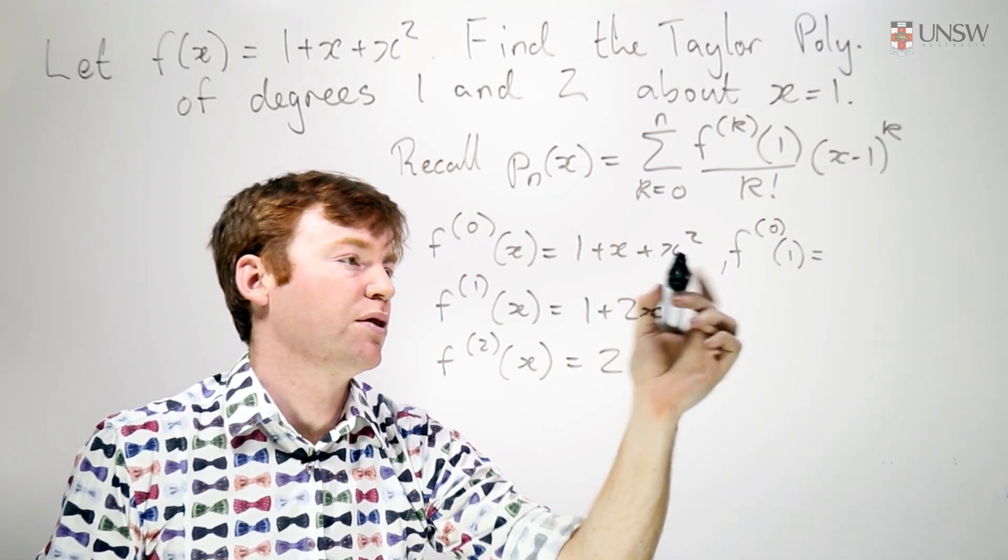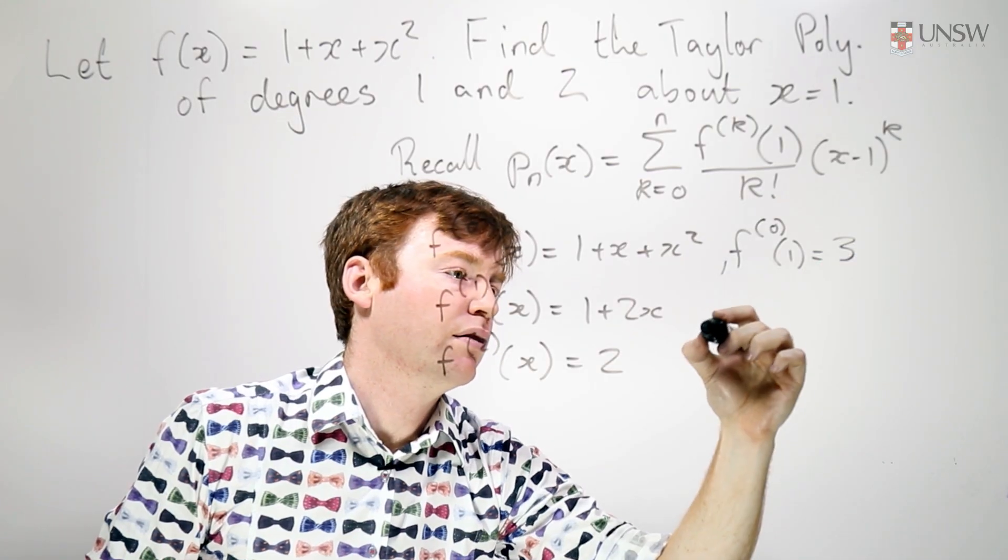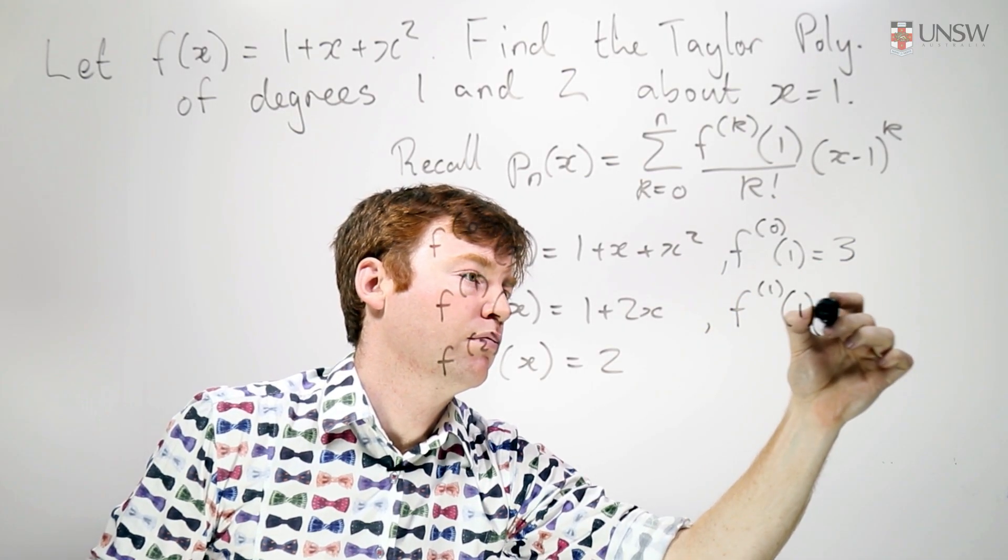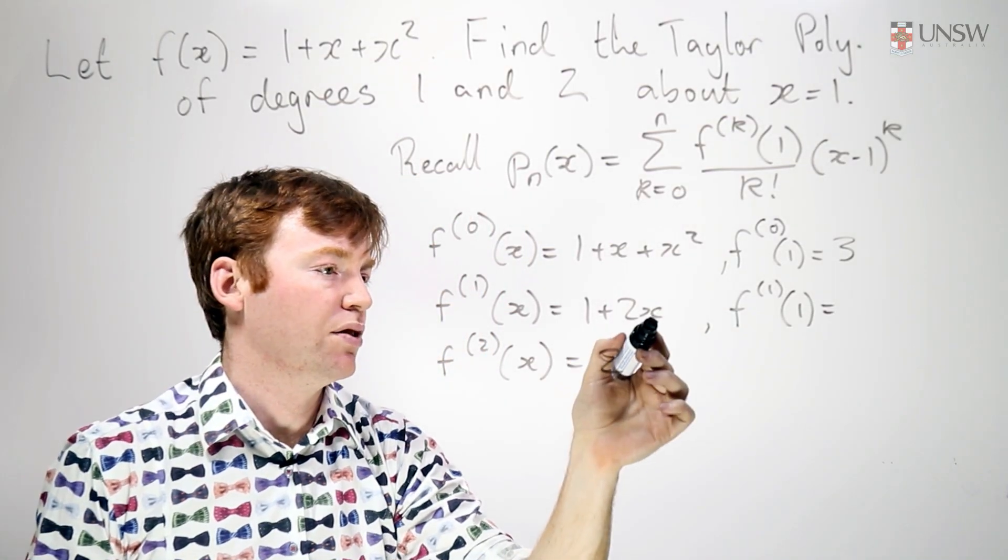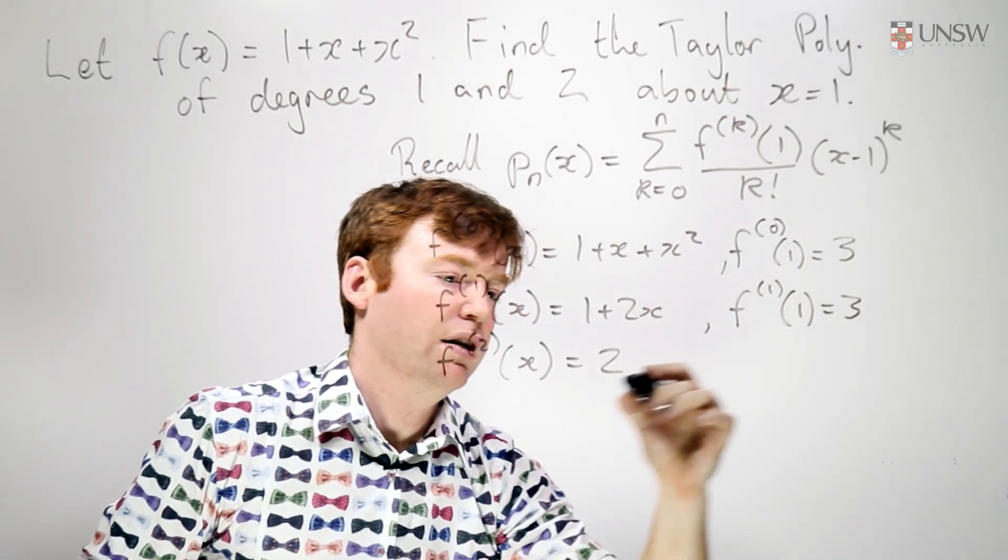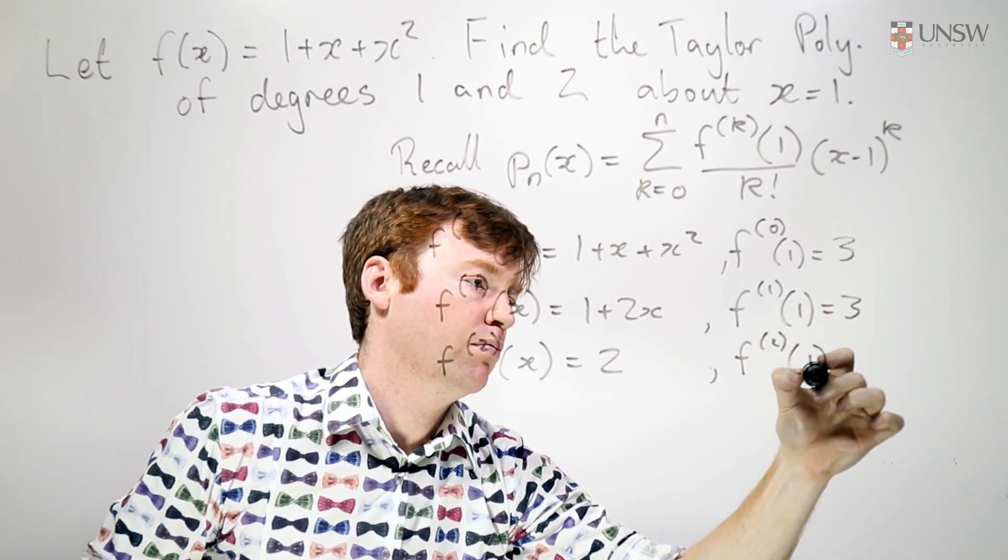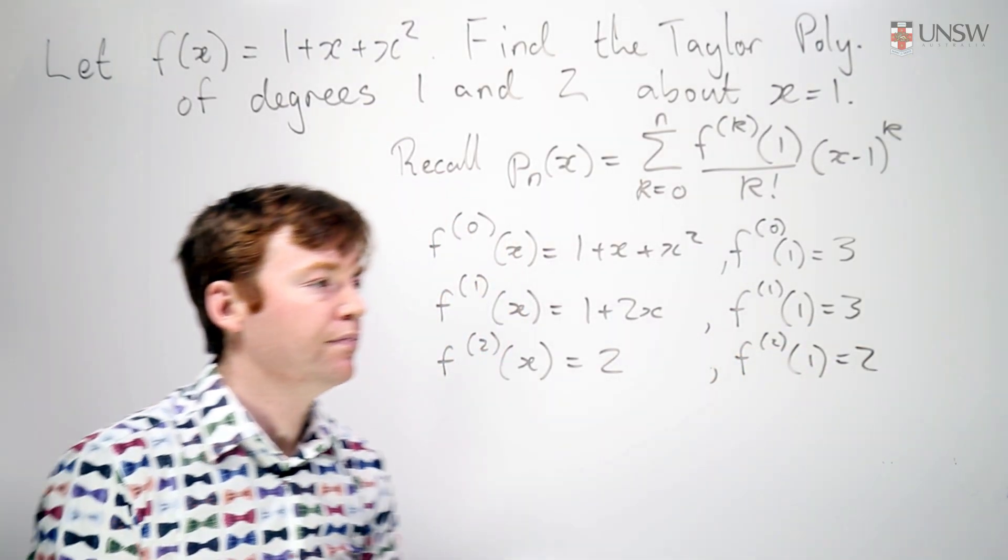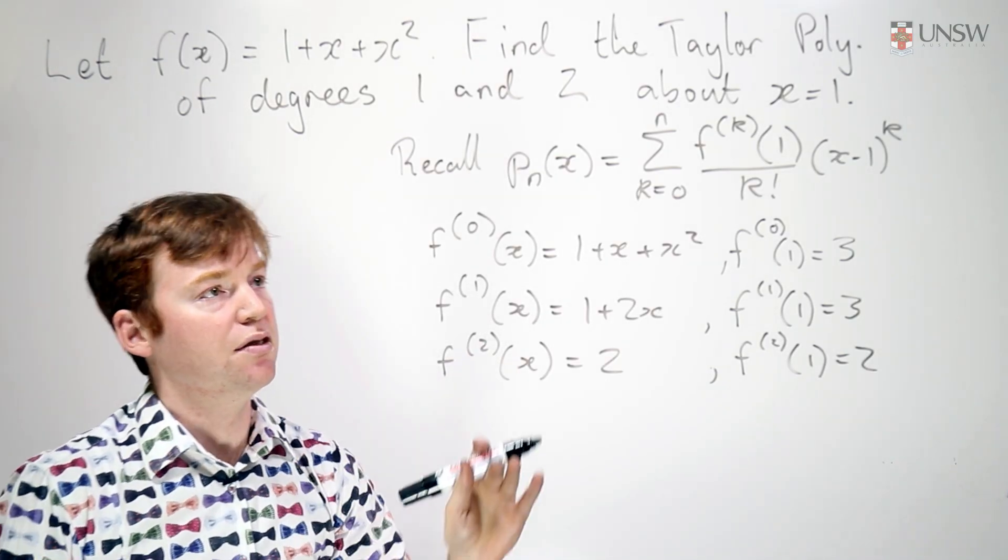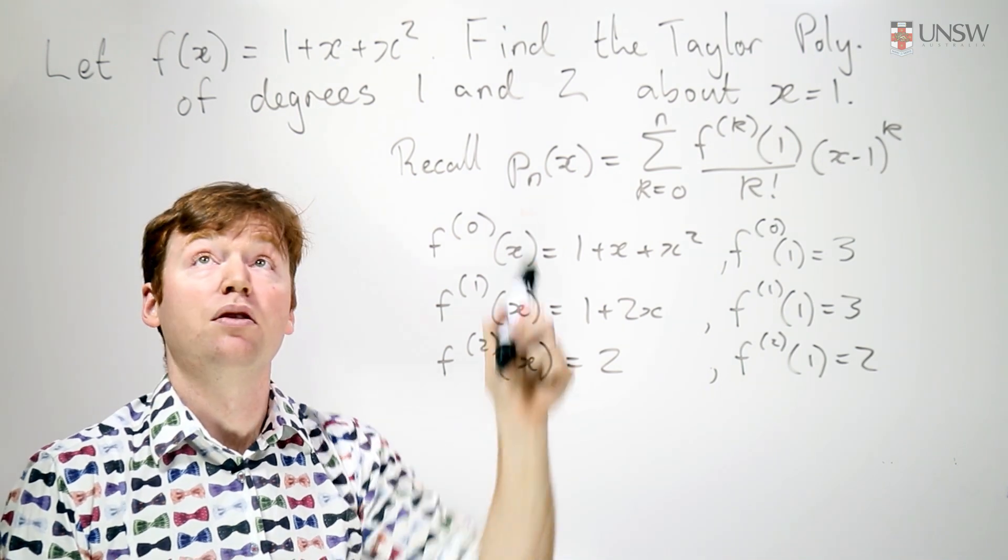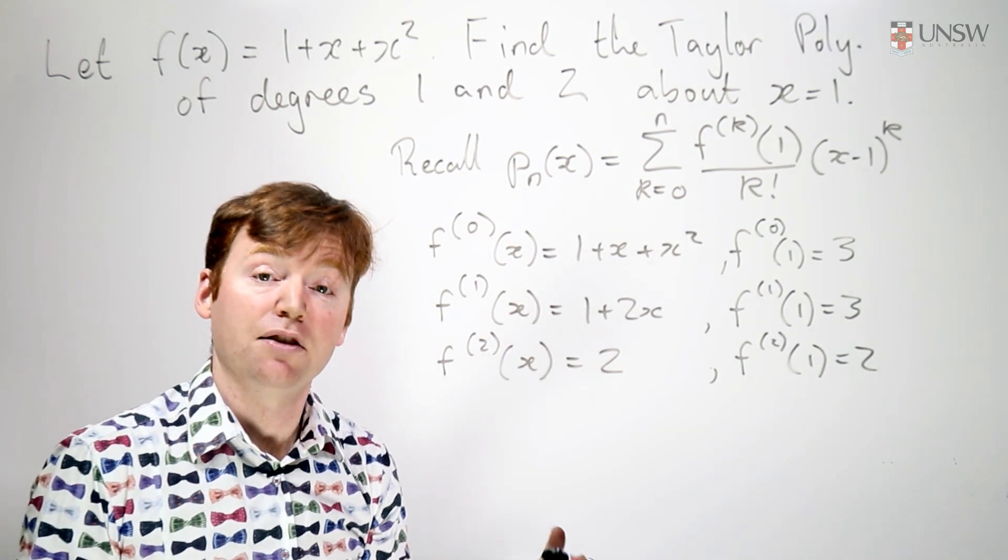So here it's 1 plus 1 plus 1, which is 3. Here it's 1 plus 2, which is also 3, and this is always 2. Okay, now I have everything I need. I'll just plug it into the formula and obtain the degree 1 polynomial approximation to this polynomial at x equals 1.